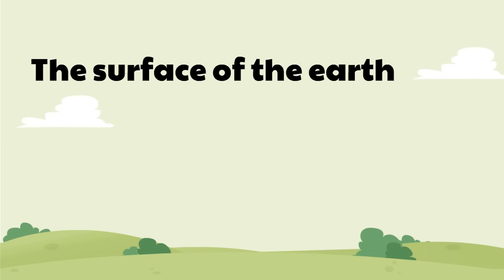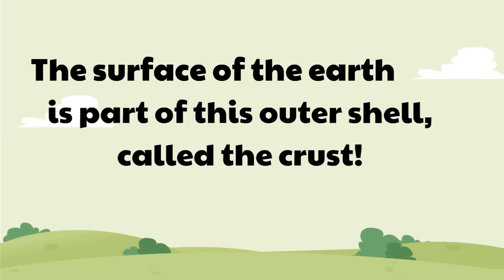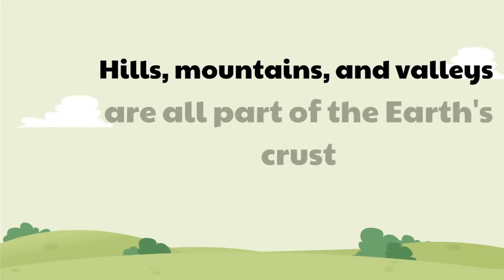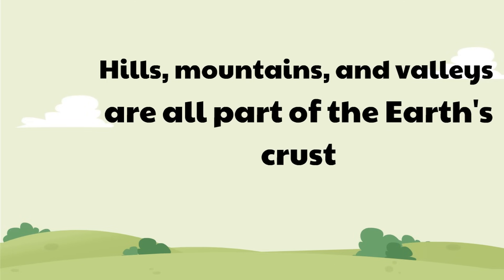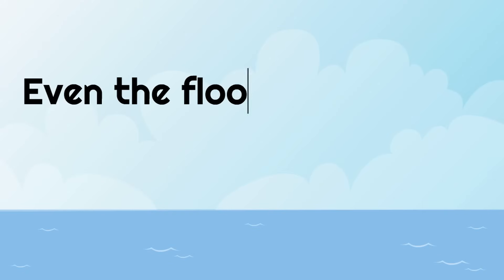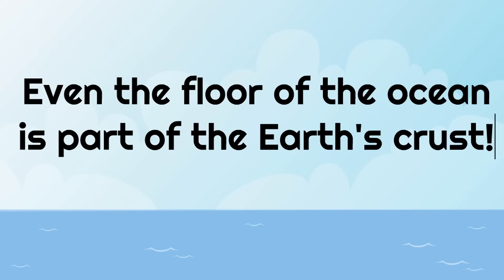The surface of the earth is part of this outer shell. Remember, the outer shell is called the crust. This means that hills, mountains, and valleys are all part of the earth's crust. Even the floor of the ocean is part of the earth's crust.